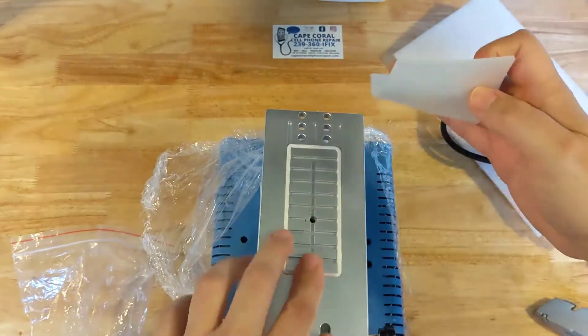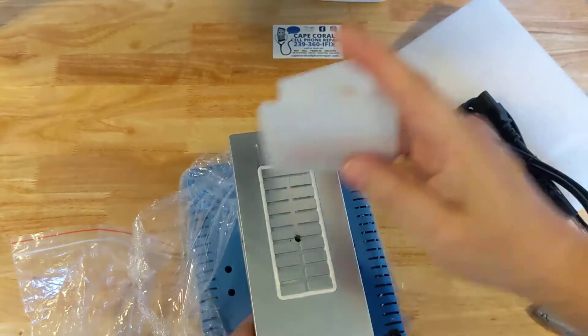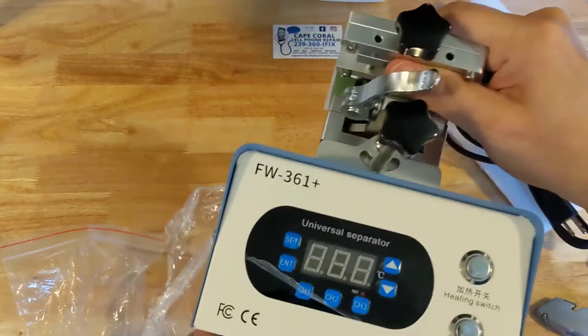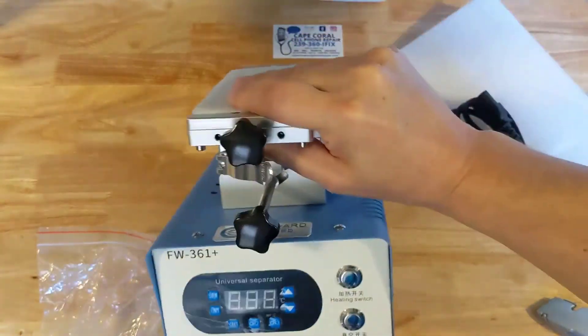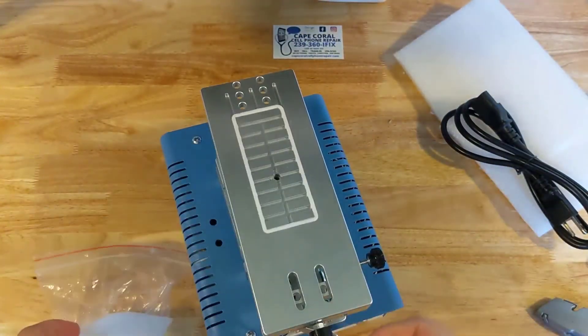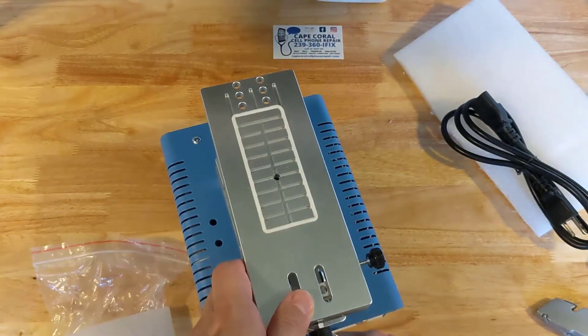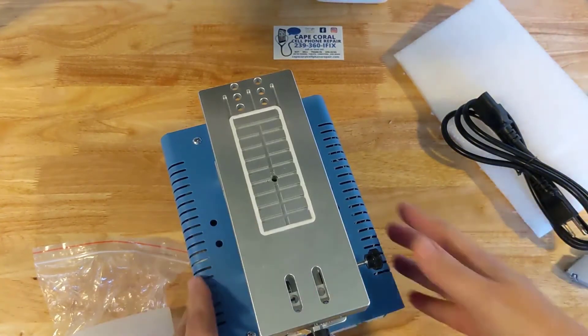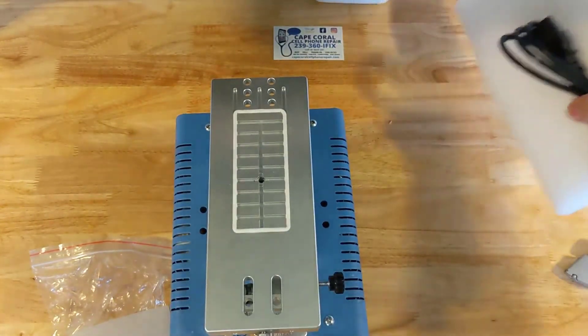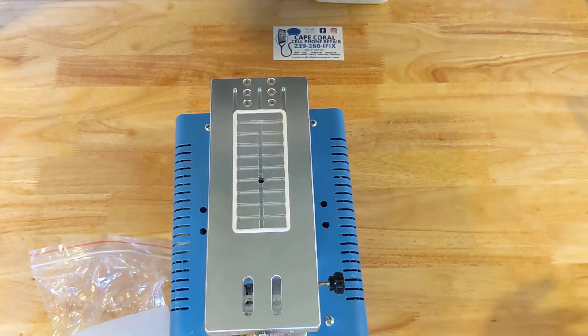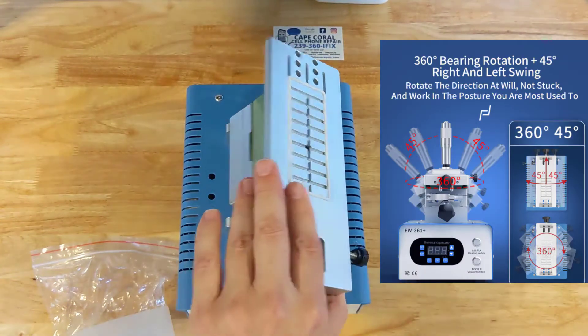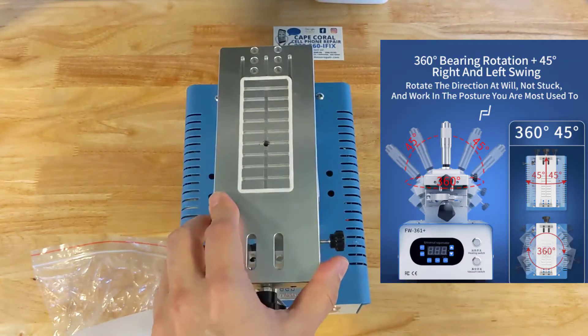It does have the silicone pad for the top. So this is something that's really different from their past machines. Let's get this out of the way. Now you can turn it at an angle, 45 degree angle. You weren't able to do that before. So that's a brand new feature.